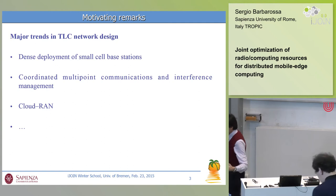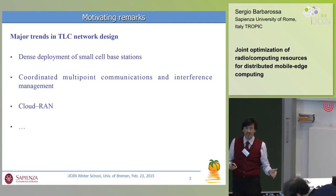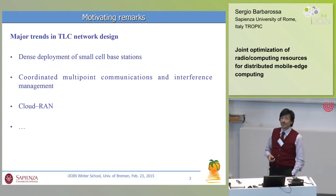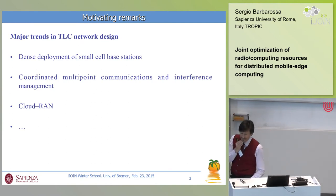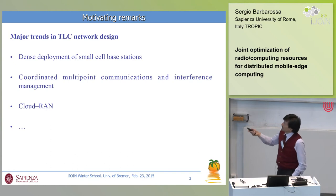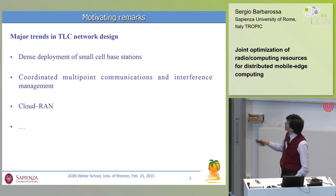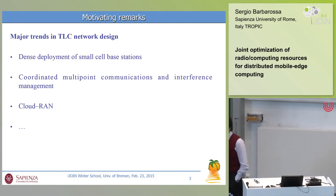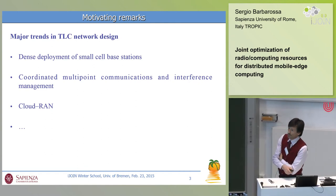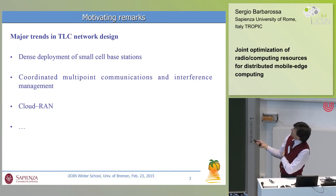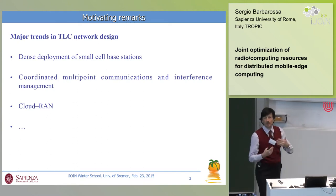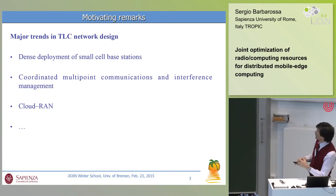Looking at these two different perspectives — from the communication side, one of the key driving factors for improving area spectral efficiency (bits per second per hertz per square meter) is the dense deployment of small cell base stations. At the same time, as you increase density you have to deal with interference, and there is a clear trend towards virtualization — C-RAN, cloud RAN, and so on.